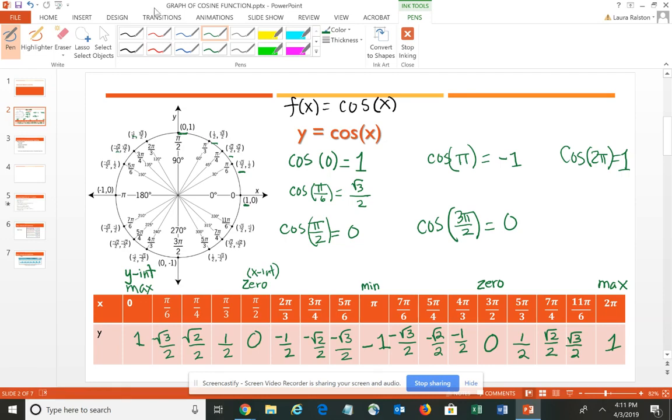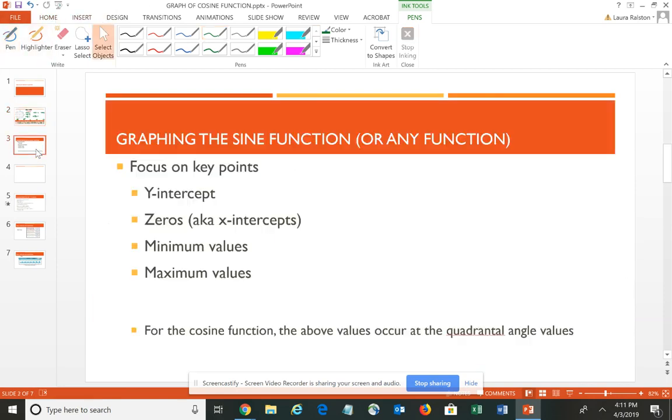I'll point out the maximums and the zeros and that kind of thing because those are the points that we tend to focus on when we are graphing the cosine function or any function. You want to focus on those key points – your Y intercept, your zeros, your minimum values and your maximum values. And typically for the cosine, similar to the sine, those values occur at the quadrantal angles.